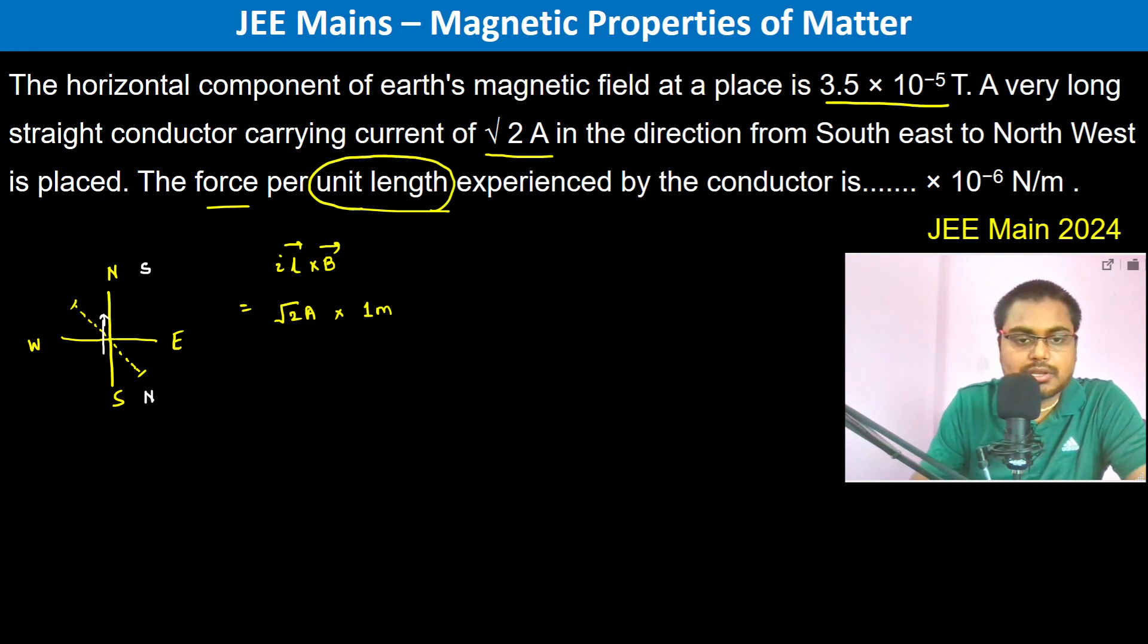B is 3.5 × 10^-5 Tesla. Because it is a cross product, it's going to equal sin 45°, which is 1/√2. So the √2 cancels out.